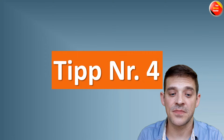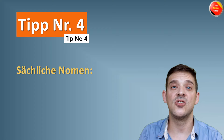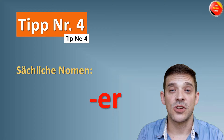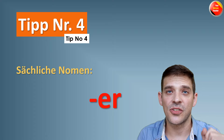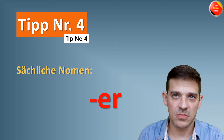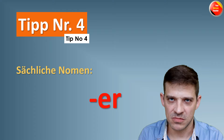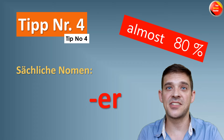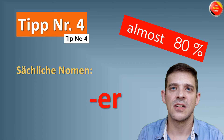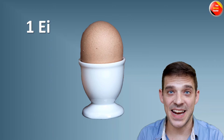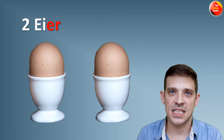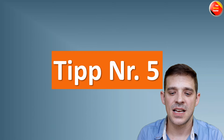Tipp number vier — sächliche Nomen, neutral nouns. What do you do? You add ER. You're going to be fine in around 80% of all the nouns. Zum Beispiel: ein Bild → zwei Bilder. Oder ein Ei, that's an egg → zwei Eier.